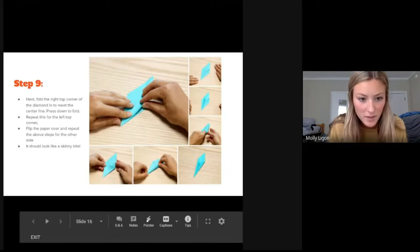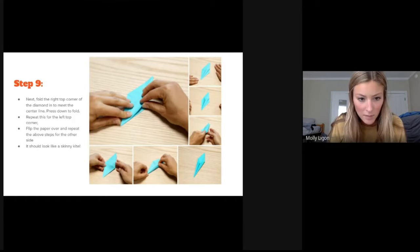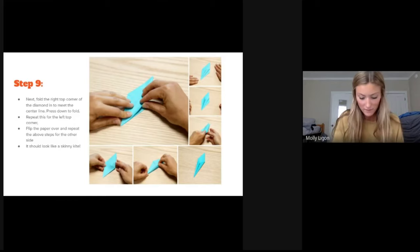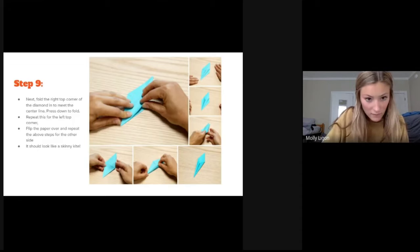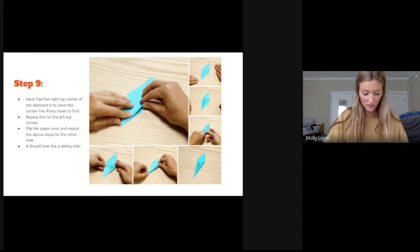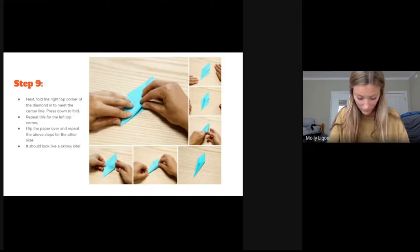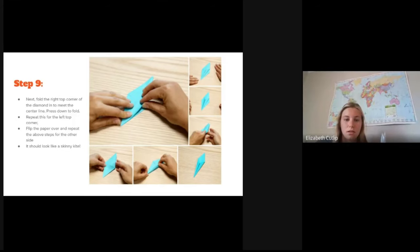Okay. So next fold the right top corner of the diamond in to meet the center line. And then you're supposed to repeat on the left side. And then once you're done with that, it should look kind of like this. And then it asks to flip the paper over and fold the corners in on the other side too. And it should kind of look like a little kite.